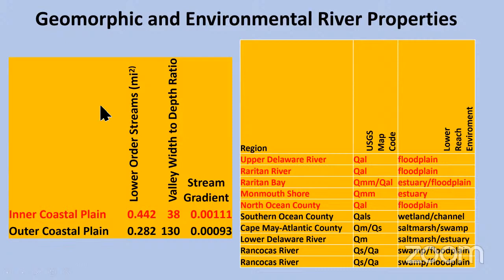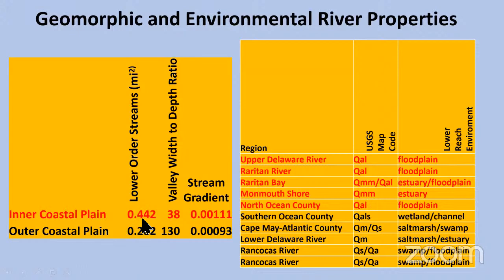Looking at the lower order streams per square mile: if you have a stream with a lot of small tributaries, it will drain well. If you have very few of them, it will tend to be very swampy. When you look at the numbers, the intercoastal plain shows more small streams per square mile than the outer coastal plain. What that means is you've got better drainage in the intercoastal plain than in the outer coastal plain.